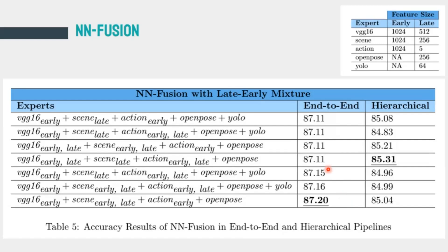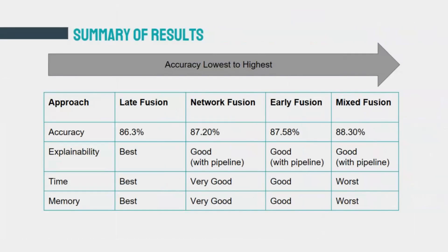Here is a qualitative summary of our findings. First, accuracy is very comparable across all models, with the range of best results around 2%. Second, higher accuracy correlates with bigger models requiring more memory and time. Third, late fusion provides best explainability as features are semantically self-explanatory. Fourth, early and mixed fusions provide the best accuracy via low-level features. Fifth, network fusion provides a compromise across all aspects. Sixth, the hierarchical architecture shows no improvement over the end-to-end architecture.